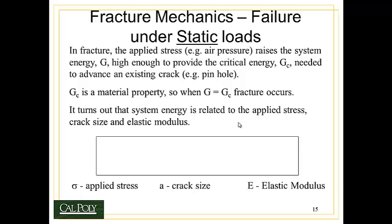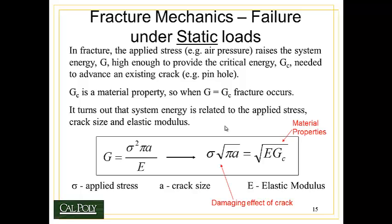Well it turns out that the system energy G is related to the applied stress, the size of the crack, and the elastic modulus of the material. And it's given by this equation. The energy of the system G is equal to the stress squared, times pi, times the crack size, divided by the elastic modulus.